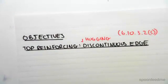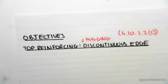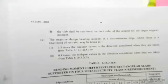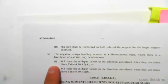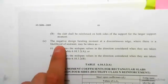So what we're going to do is first look at the code, clause 6.10.3.2, and we're looking at part c. This part reads, part c of 6.10.3.2, it says the negative design bending moment, so the hogging moment...